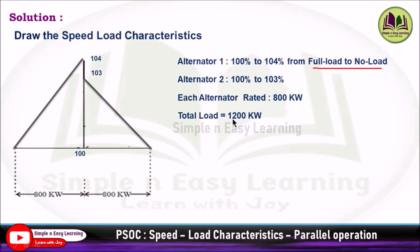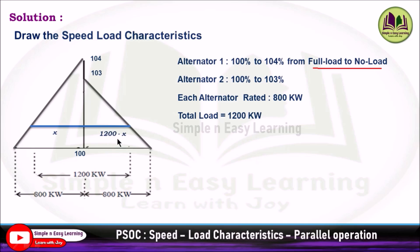The two alternators, alternator 1 and alternator 2, each have a rated capacity of 800 kilowatt. The total load of 1200 kilowatt is shared between them. To represent this, draw a line in between the two speed regulation curves. Consider alternator 1 sharing a load of x and the remaining load shared by alternator 2, that is 1200 minus x. This is the point where both alternators share the load, and the frequency at which the load is shared is h. The points are labeled using alphabets: A, B, C, D, E, F, H, G.